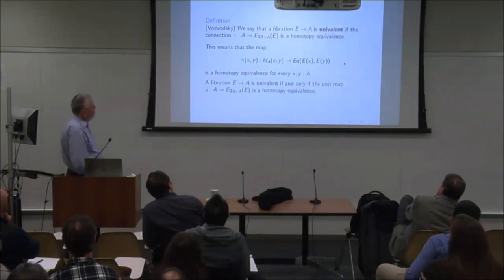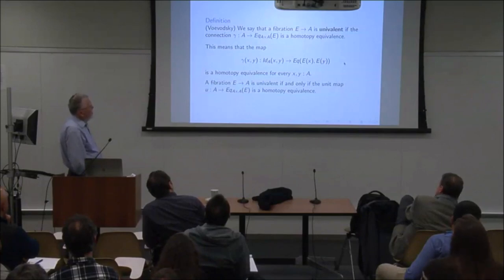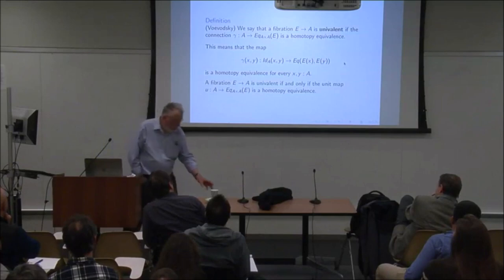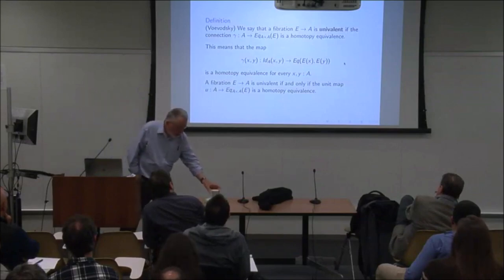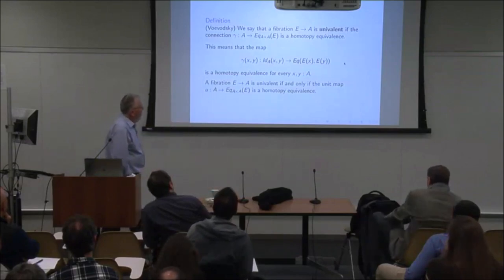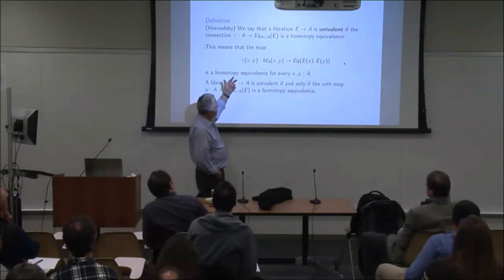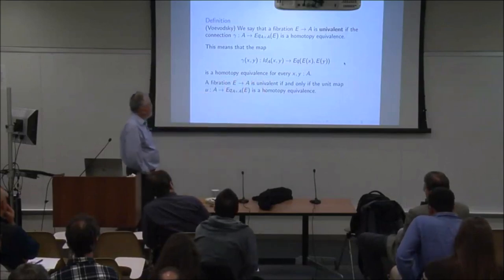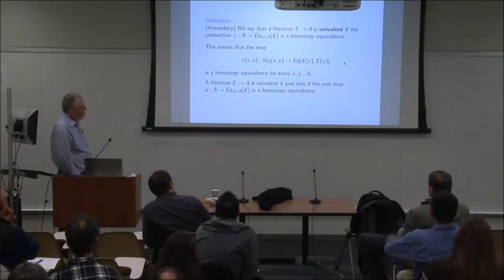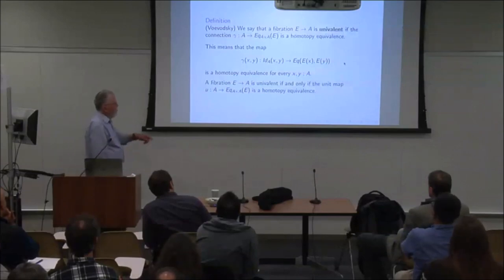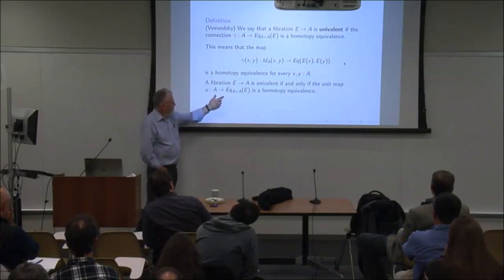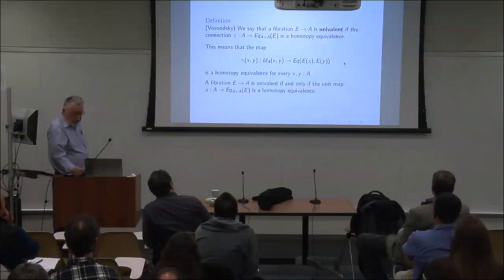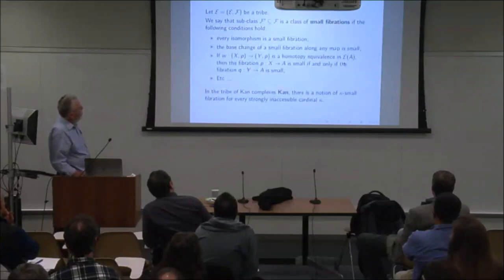We say that a fibration is univalent — this is Voevodsky's definition — if the connection γ is actually a homotopy equivalence. This is equivalent to saying that for each x and y, the map γ is a homotopy equivalence, or equivalently that the unit map is a homotopy equivalence.